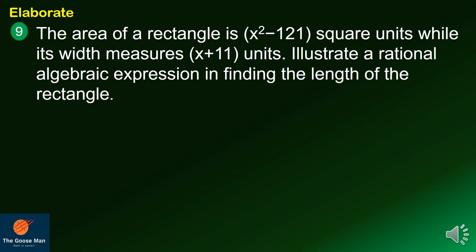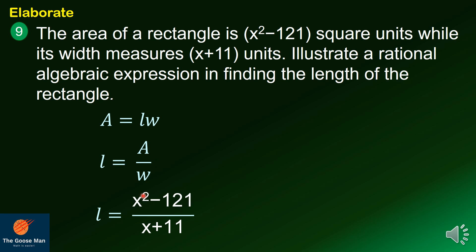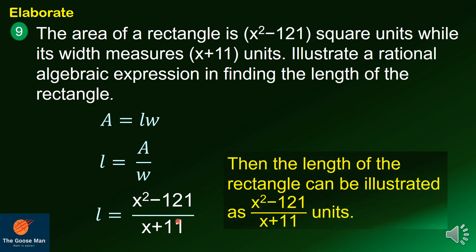Let's try another word problem. Recall that area equals length times width. If we want to find the length, divide both sides by the width, so length equals area divided by width. Substituting, the area is x squared minus 121 and the width is x plus 11. Therefore, the length of the rectangle is x squared minus 121 all over x plus 11 units.